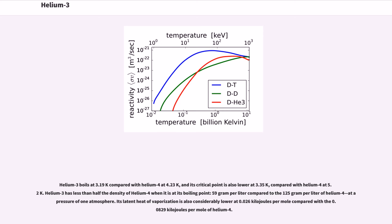Helium-3 boils at 3.19 K compared with helium-4 at 4.23 K, and its critical point is also lower at 3.35 K, compared with helium-4 at 5.2 K. Helium-3 has less than half the density of helium-4 when it is at its boiling point, 59 g per liter compared to the 125 g per liter of helium-4, at a pressure of one atmosphere. Its latent heat of vaporization is also considerably lower at 0.026 kJ per mole compared with the 0.0829 kJ per mole of helium-4.